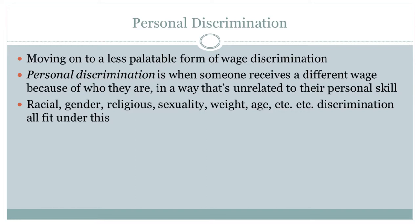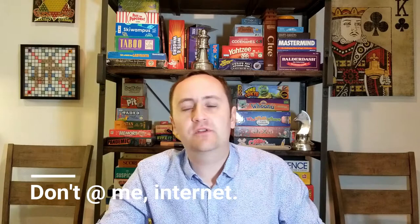What we're talking about is personal discrimination — where someone receives a different wage because of who they are in some way unrelated to their skill. There's wage discrimination on lines of race, gender, religion, sexuality, weight, age, and the list goes on. The key is that we're comparing people who are at the exact same skill level but getting paid differently. If compensating differentials is about different occupations, and unions is about different firms, discrimination is about differences between people — often at the exact same job in the exact same firm.